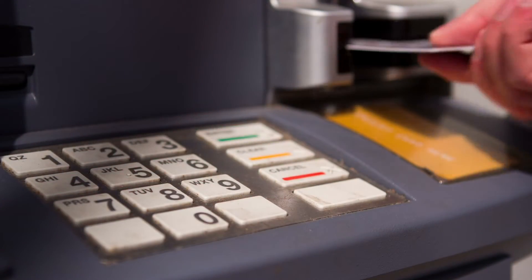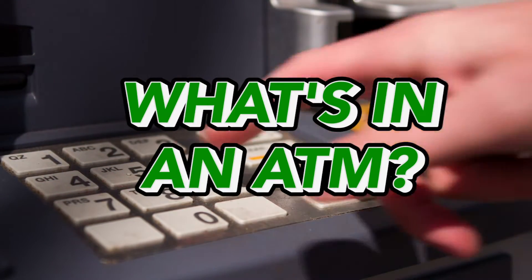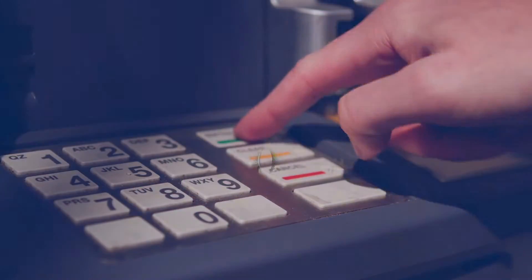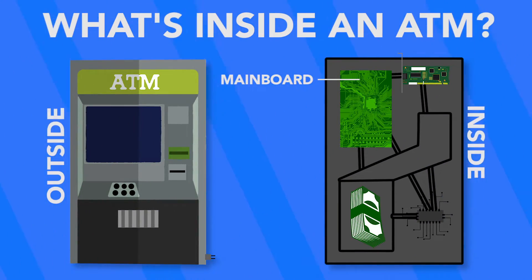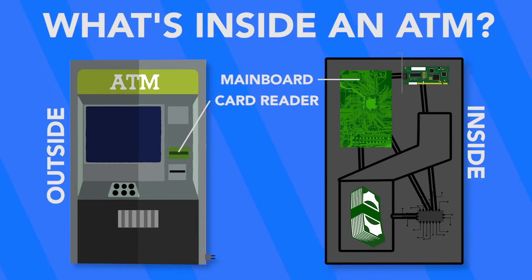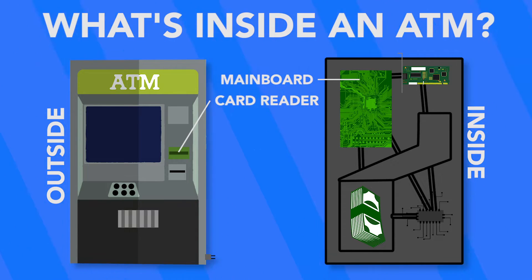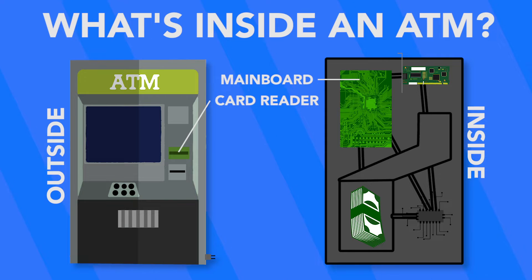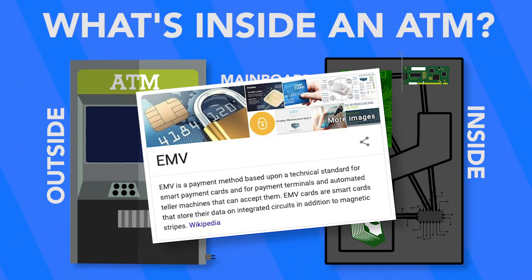So what all goes into this giant computer that dispenses cash? The major parts are the mainboard — the processor of the ATM that houses the CPU, memory, and connects all of the other ATM parts together. Then there's the card reader, the device that reads the card and account information stored on the chip or magnetic strip on your card. Most card readers in ATMs are enabled to read Europay, MasterCard, and Visa-style cards — called EMV — which is the global standard for card reading.